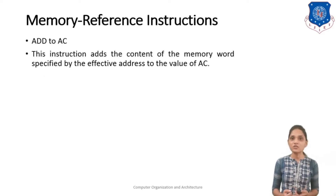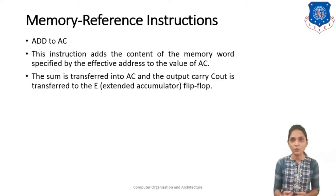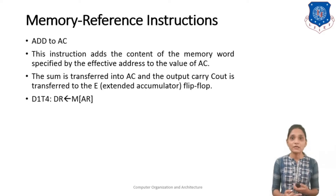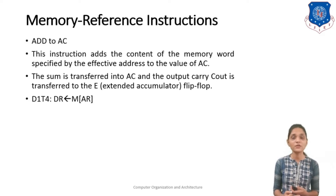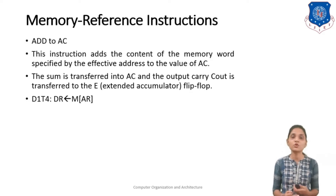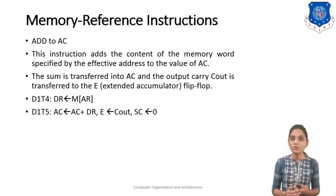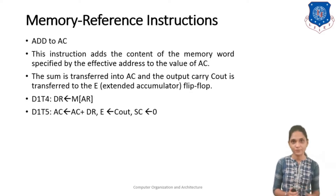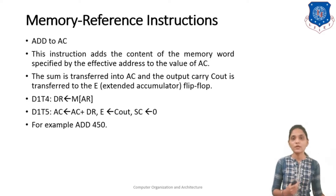The second instruction is ADD to the accumulator. In this instruction the content of the accumulator is added to the memory location's content and the result is stored into the accumulator. If a carry is generated, it is stored into the E flag. Here also we require to first transfer the content of the memory location to the DR register at T4, and then at T5 timing signal the addition operation is performed. If a carry is generated it is stored into the E flag. After this you have to clear the Sequence Counter.